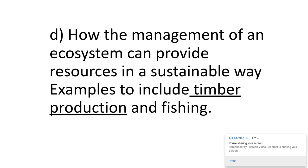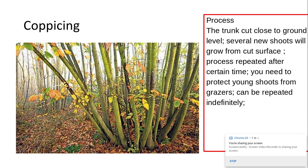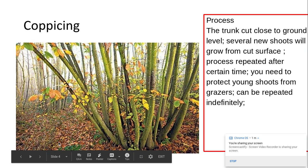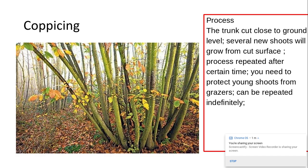We're going to start off by looking at timber production and then move on to fishing. There are a couple of ways in which we can sustainably produce timber. The first one is coppicing, where the tree trunk is cut very close to the ground and therefore several new shoots will grow from that cut surface. This process can be repeated after a certain length of time, though you would need to protect the young shoots from grazers as they grow back. This can be repeated indefinitely because the tree will just continue to grow each time you cut it.